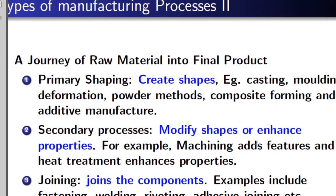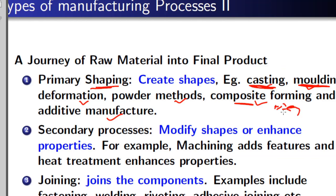To summarize, four different processes were studied. The first was primary shaping, which includes casting, molding, deformation, powder methods, composite forming, and additive manufacturing. In casting, liquid metal is poured into a cavity and solidified. Molding is similar but uses highly viscous liquid. In deformation, large force brings the workpiece to the necessary shape. In powder methods, metal powder is compacted and heated. In composite manufacturing, fiber and resin are mixed and cured. In additive manufacturing, material is added layer by layer to create complex shapes.